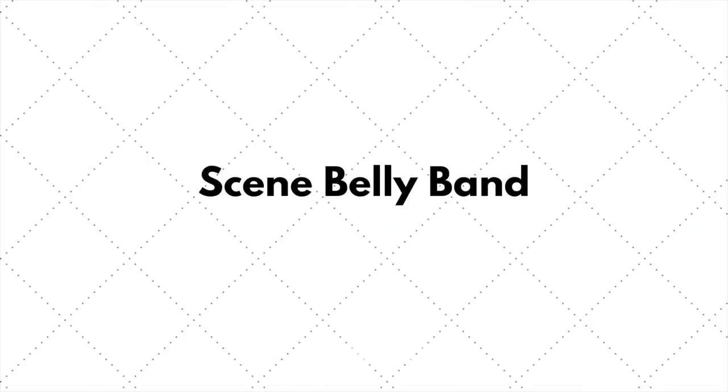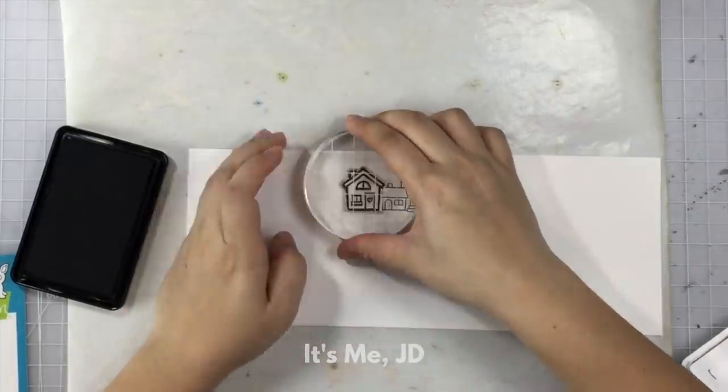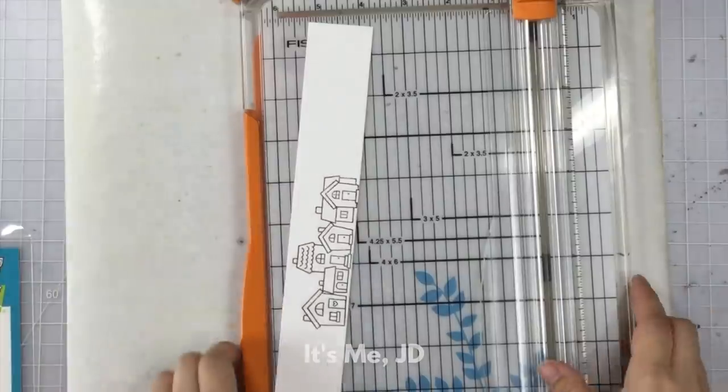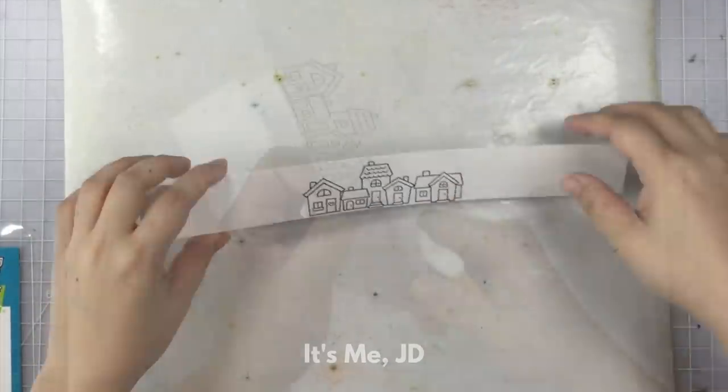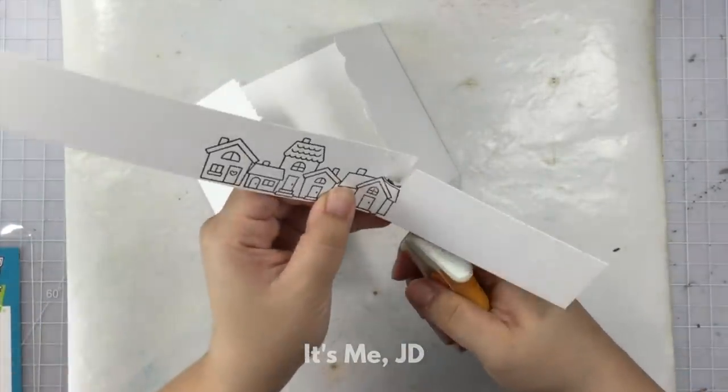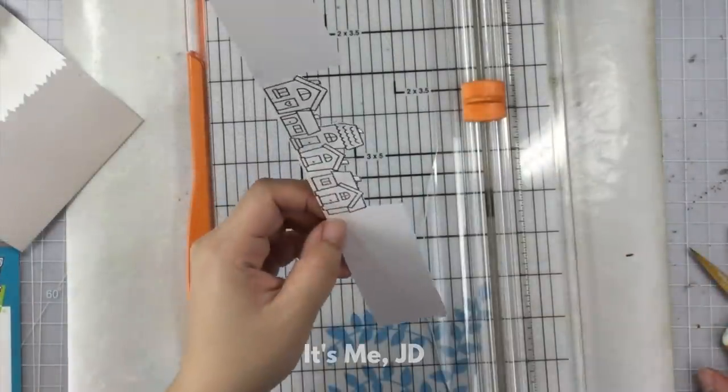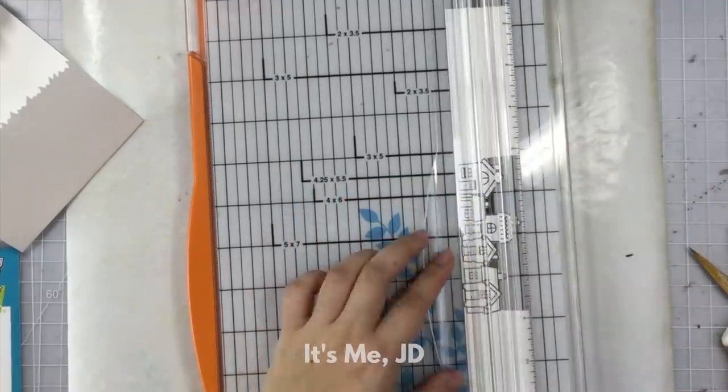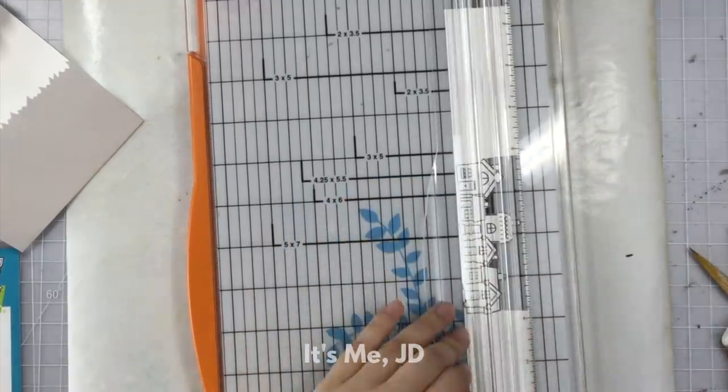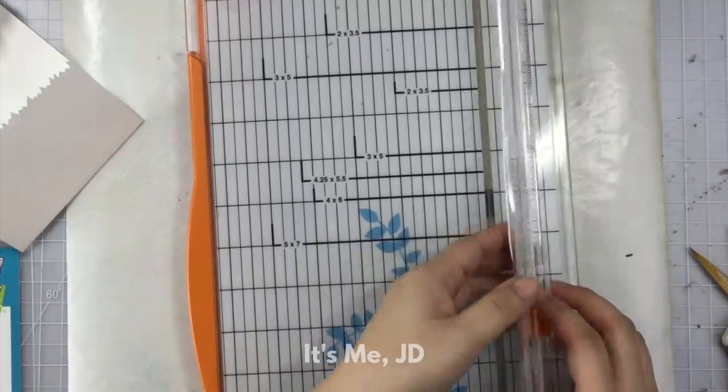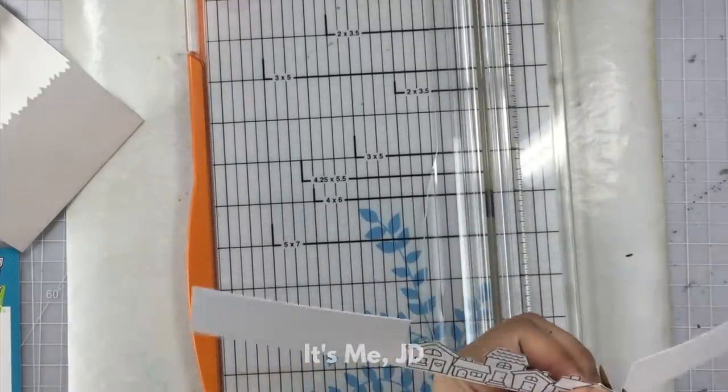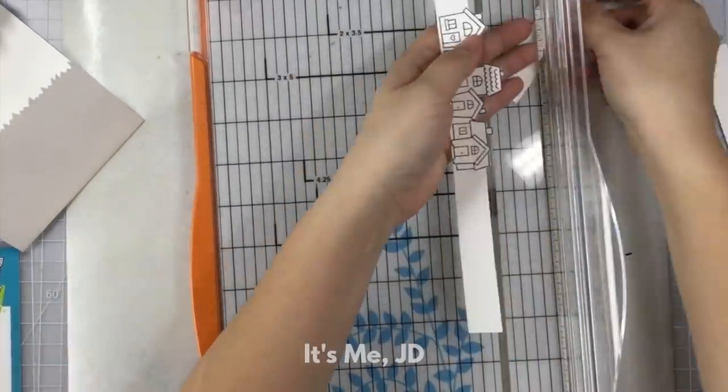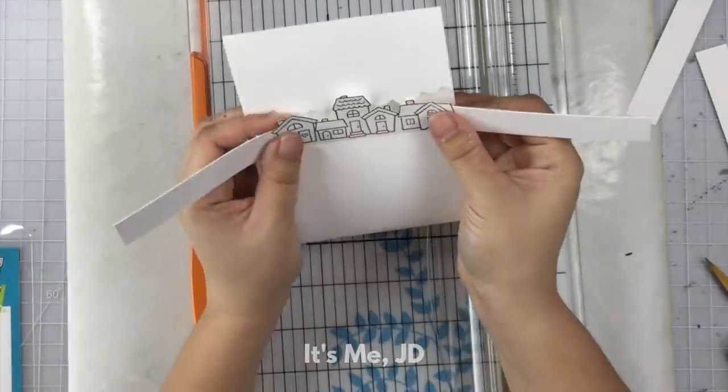For a whimsical touch to your belly band you can stamp and create a scene so I have this fun neighborhood village or happy village stamp set and I use that to create a little neighborhood this is going to be congratulations on your new home kind of card and after cutting off the top edge I'm going to trim the sides down just to make my belly band a little bit slimmer. I didn't want this belly band to be too tall because I didn't want it to hide the die cut gatefold card that I have.